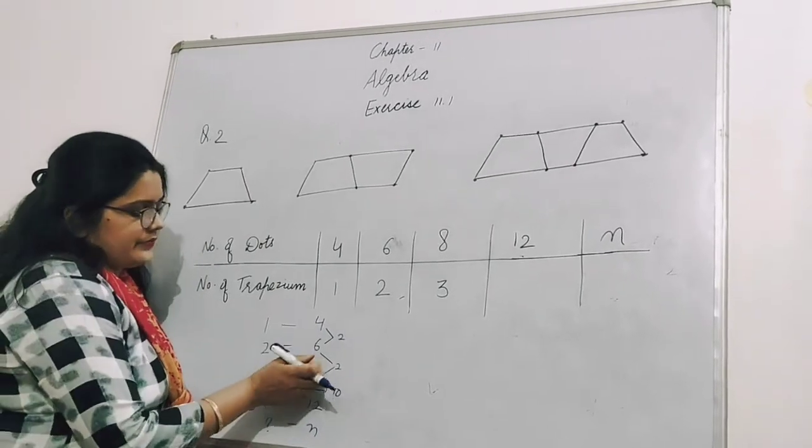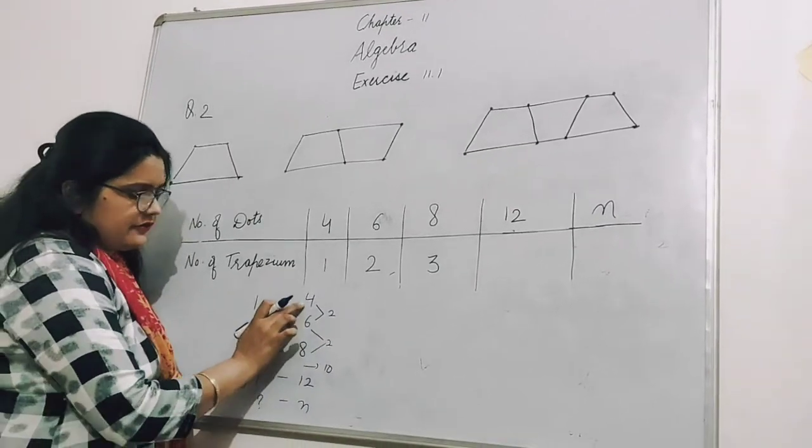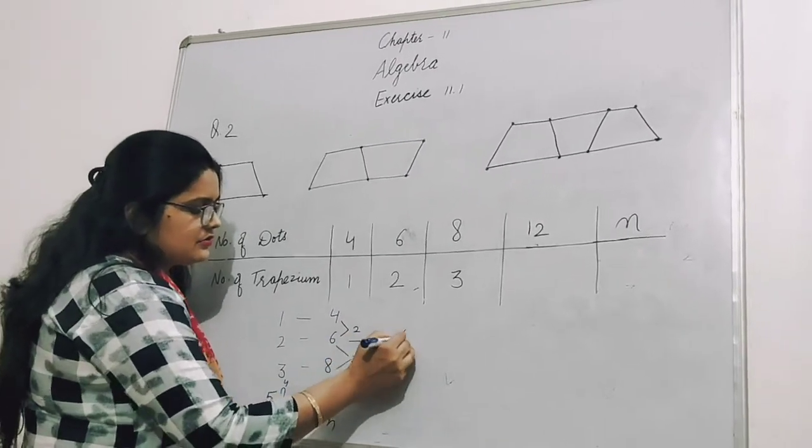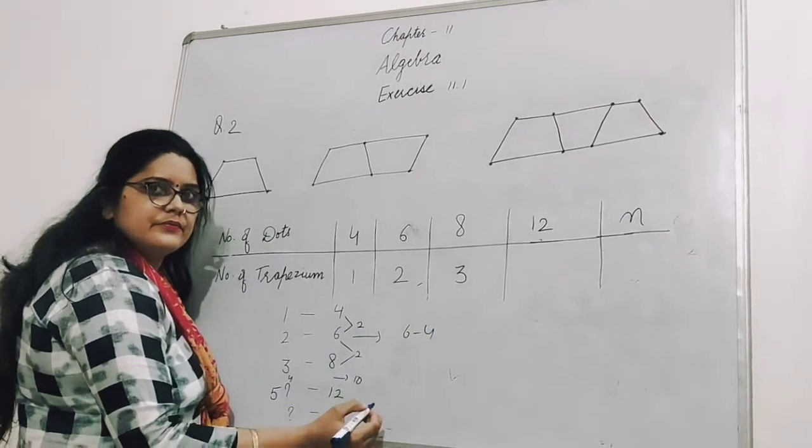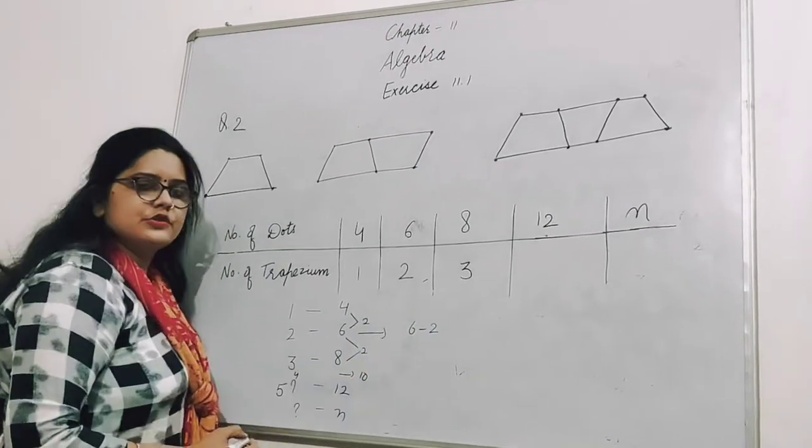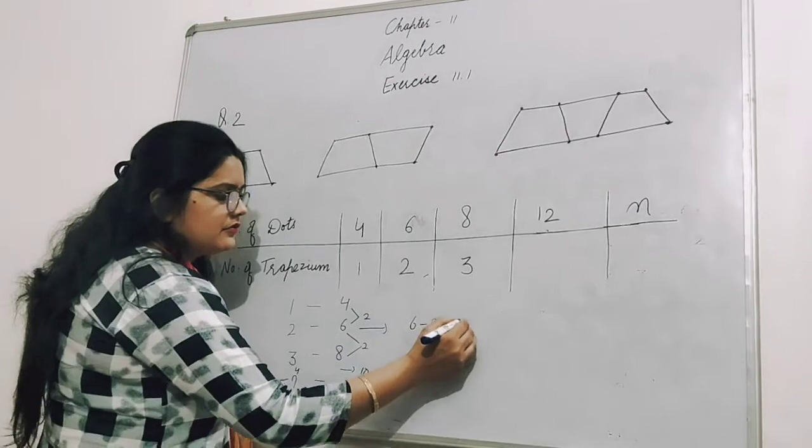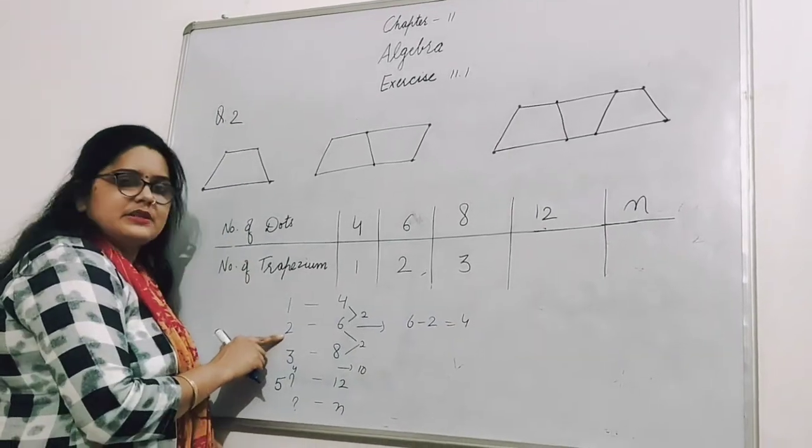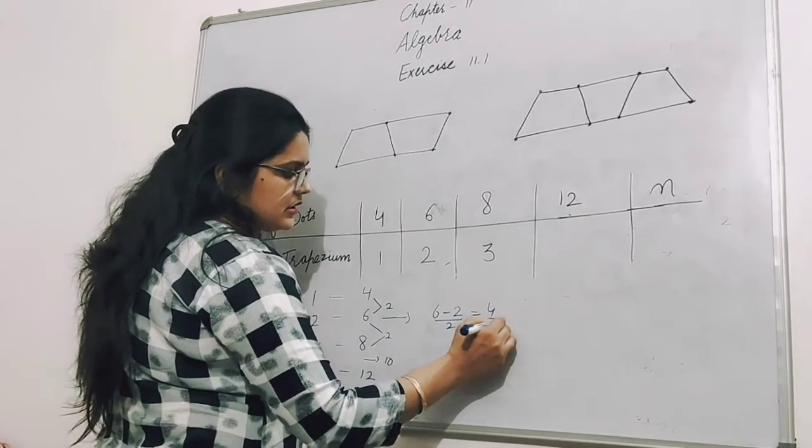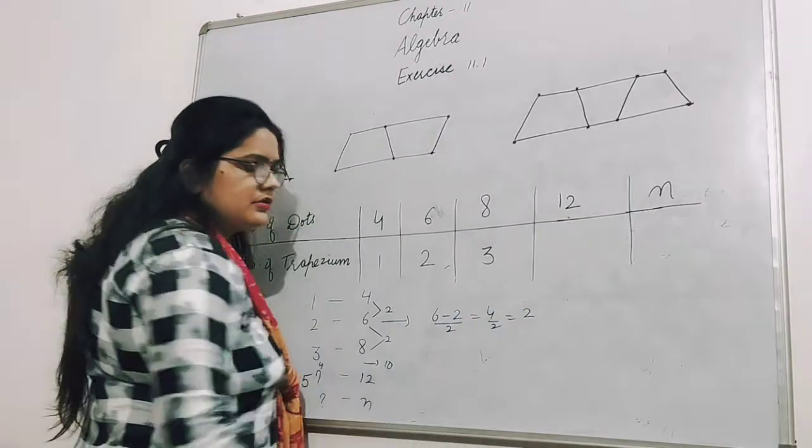Suppose this is 6 and 4. Difference between them is 2. 6 minus 2 gives us 4. How many trapeziums should I make? 2. So if I divide this by 2, how many trapeziums will form? 2.